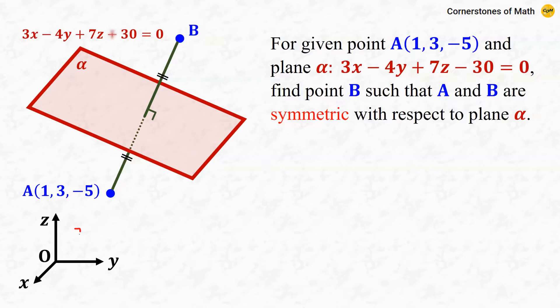So in this video, we go 3D, the coordinate space. And instead of a line, we now have a plane. So for given point A, which is (1, 3, -5), and plane alpha, given as 3x - 4y + 7z - 30 = 0, this is the equation of a plane, find point B such that A and B are symmetric with respect to plane alpha.